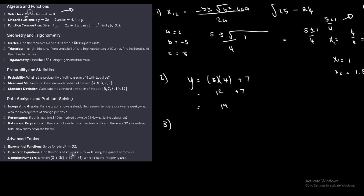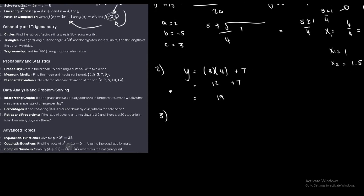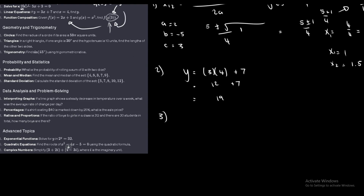Let's look at the third one — function composition. Given f(x) equals 2x plus 1 and g(x) equals x squared, find f(g(3)). First, calculate g(3), which is 3 squared, giving 9. Then substitute that result into f(x). So f(9) equals 2 times 9 plus 1, which is 18 plus 1. So the final answer is 19.